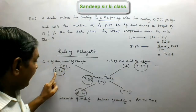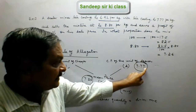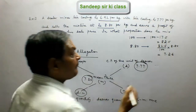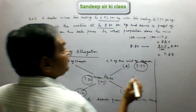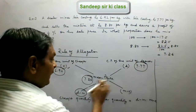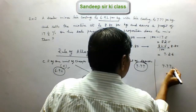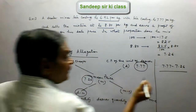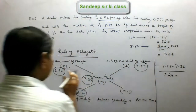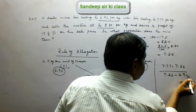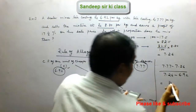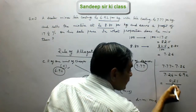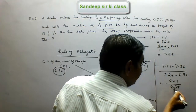So we have C = 6.92, D = 7.77, and M = 7.26. The cheaper quantity to dearer quantity ratio is D minus M upon M minus C, that is 7.77 minus 7.26 upon 7.26 minus 6.92, which gives 0.51 upon 0.34. Dividing both by 17, we get 3 upon 2.